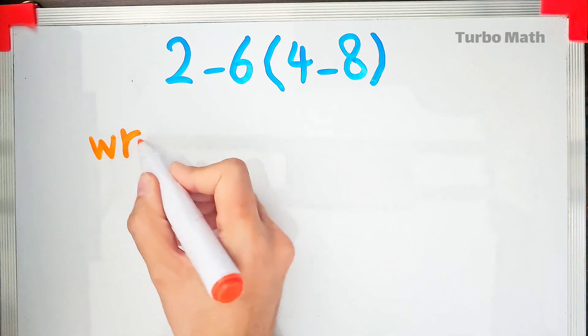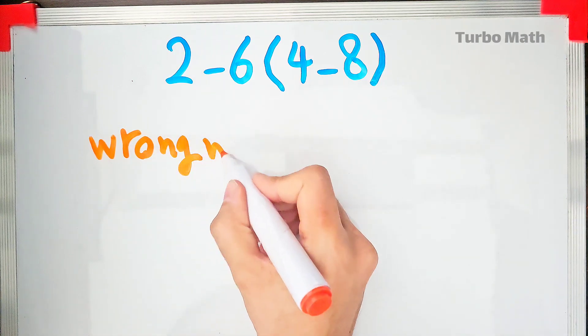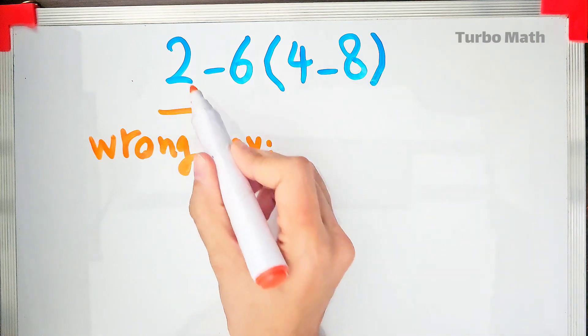In the wrong way of solving this question, some people don't pay attention to the priority of the mathematical operation. And they start from the left side of the question and simplify.